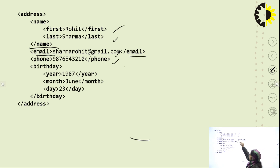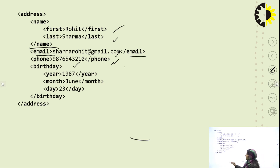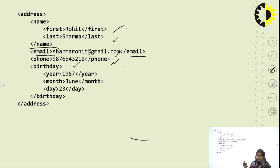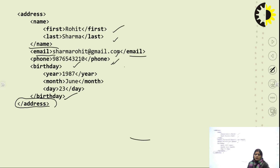Next element is phone: open the phone tag, insert the value for that element, and close the phone tag. The next tag is birthday, which has three values — year, month, and day. Open each respective tag, pass the values, and close them. Birthday tag is then closed, and finally the root element address node is closed.